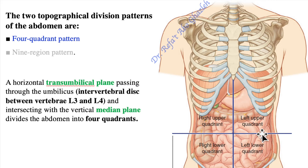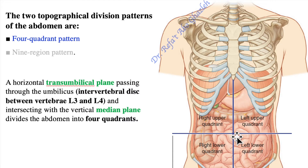By these two planes, the abdomen is divided into four quadrants. The umbilicus is located at the level of the intervertebral disc between L3 and L4.